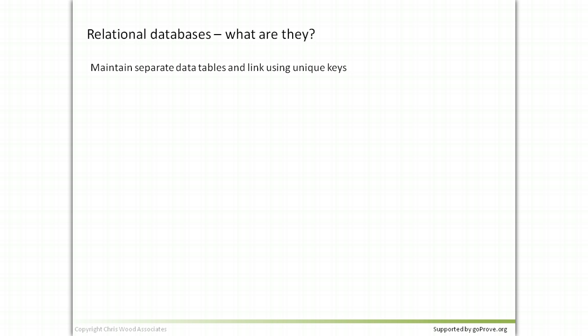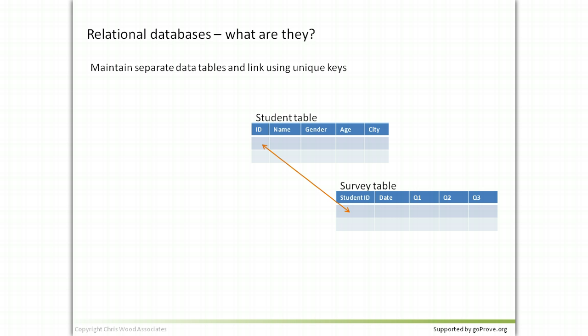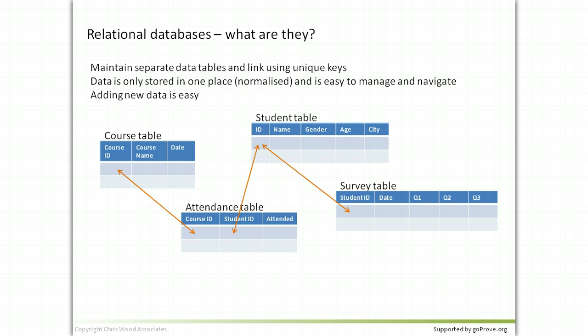What else could you use? Relational databases are the next step up, and they maintain separate data tables and link them using special keys. For instance, here we have a student table which just contains student information, and a survey table which only contains the survey information, linked together with a unique ID from the student. We can also record attendance through an attendance table and a course table. This means that data is only stored in one place — what's called normalized — and it's easy to navigate and manage. Adding new data is easy.